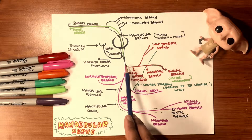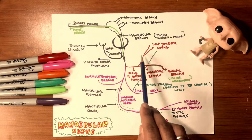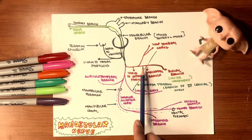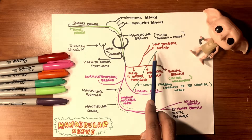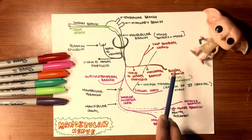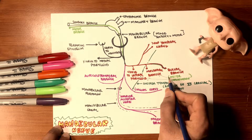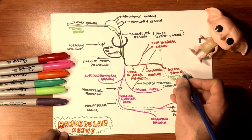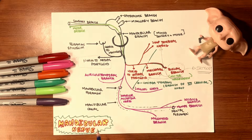Moving forward, the mandibular nerve splits into an anterior trunk and a posterior trunk. The anterior trunk gives off four branches: the nerve to the lateral pterygoid, the masseteric nerve, the buccal branch, and the deep temporal nerve. Importantly, the nerves to the muscles of mastication are all motor, while the buccal branch is solely sensory — it is the only sensory nerve from the anterior trunk.